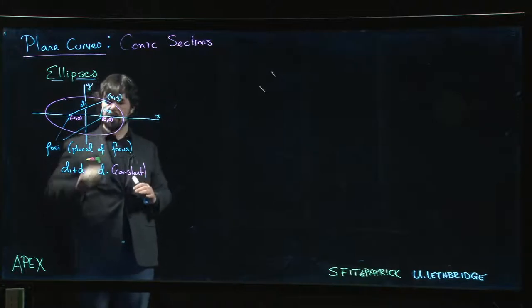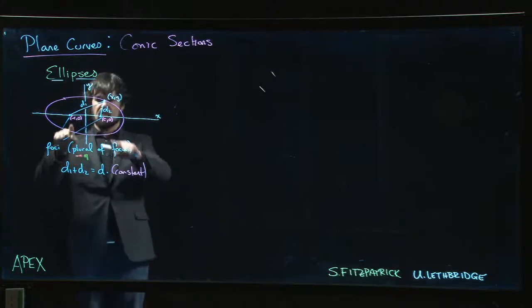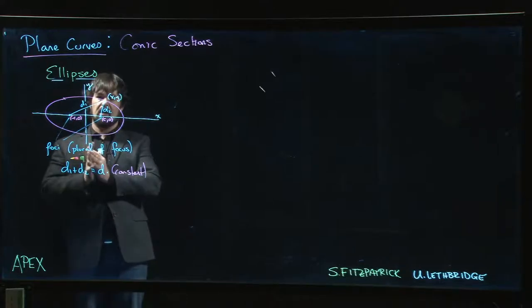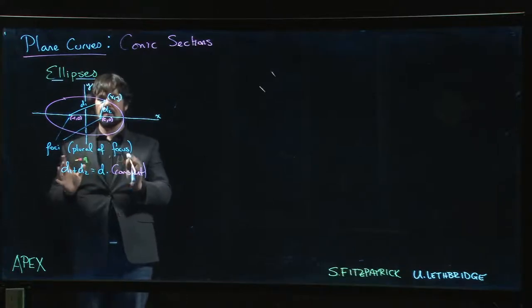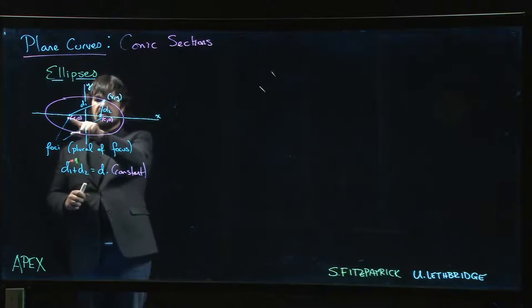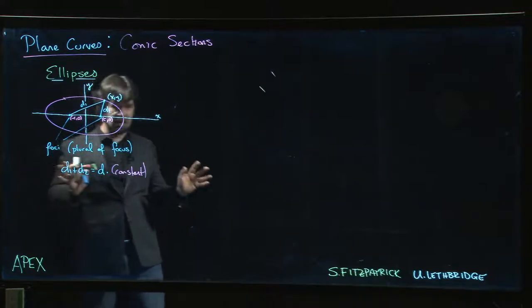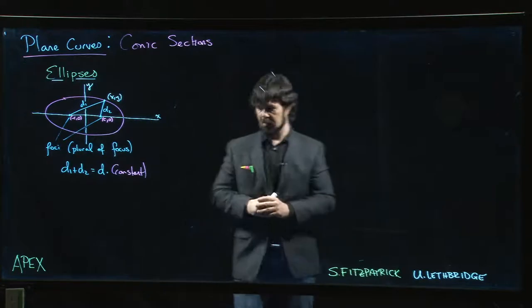There are two foci—foci is just the plural of focus. We have two points, and every point on the ellipse satisfies this condition: that the sum of the distances between the point (x, y) and these two foci shall be constant. There's this constant distance d. The sum of those two distances must always be the same.